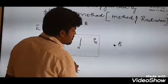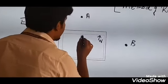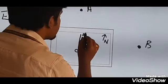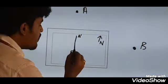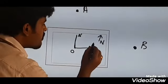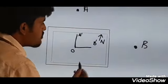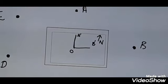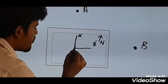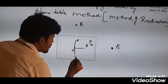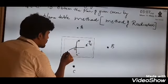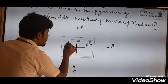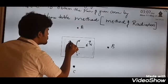Let me call this plotted point as A dash. Similarly, bisect point B and radiate the line — mark this as B dash. Similarly, radiate point C and mark it as C dash. Similarly, plot D dash and E dash.